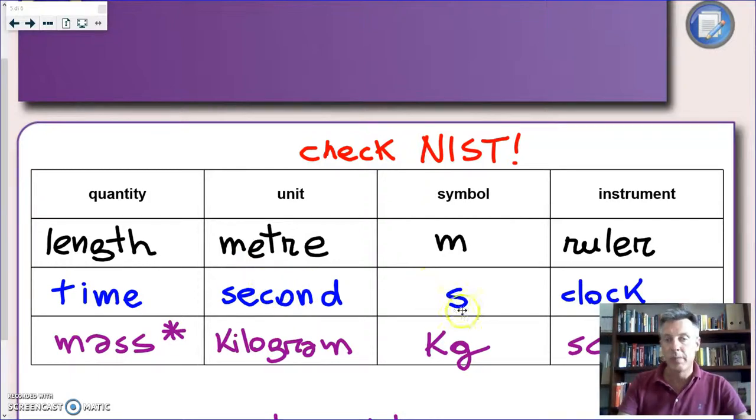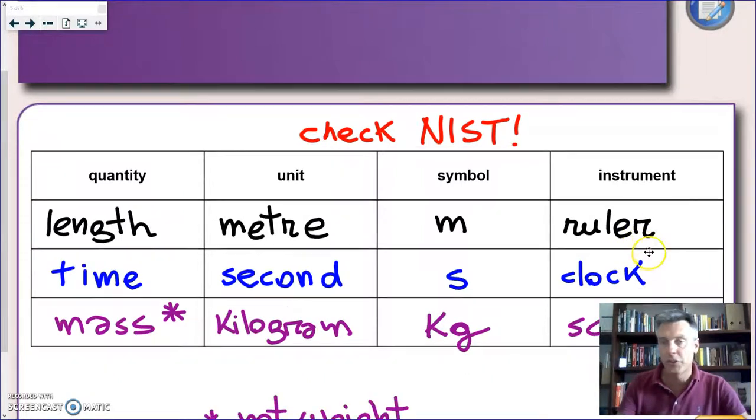The base unit for time is the second, the symbol or abbreviation is S. And again, many possible tools we can use. We can use a clock, a stopwatch, we can use a sundial, an hourglass. Depends on what you want to achieve. And finally, mass.